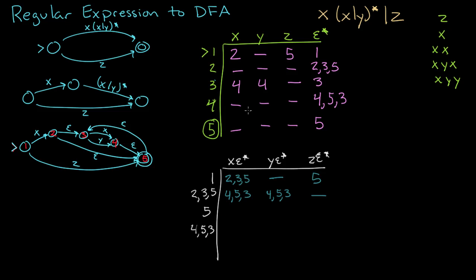From state five following X we see a blank, so blank. Five following Y is blank, and five following Z is blank. Now for state four, five, three: look at rows three, four, five under X — we see a four. Zigzag over to four's epsilon star and write down four, five, three. Do the same for Y: we see four again, so four, five, three. For Z there's nothing under the Z column, so blank. We haven't added anything new, so we are done with this chart.